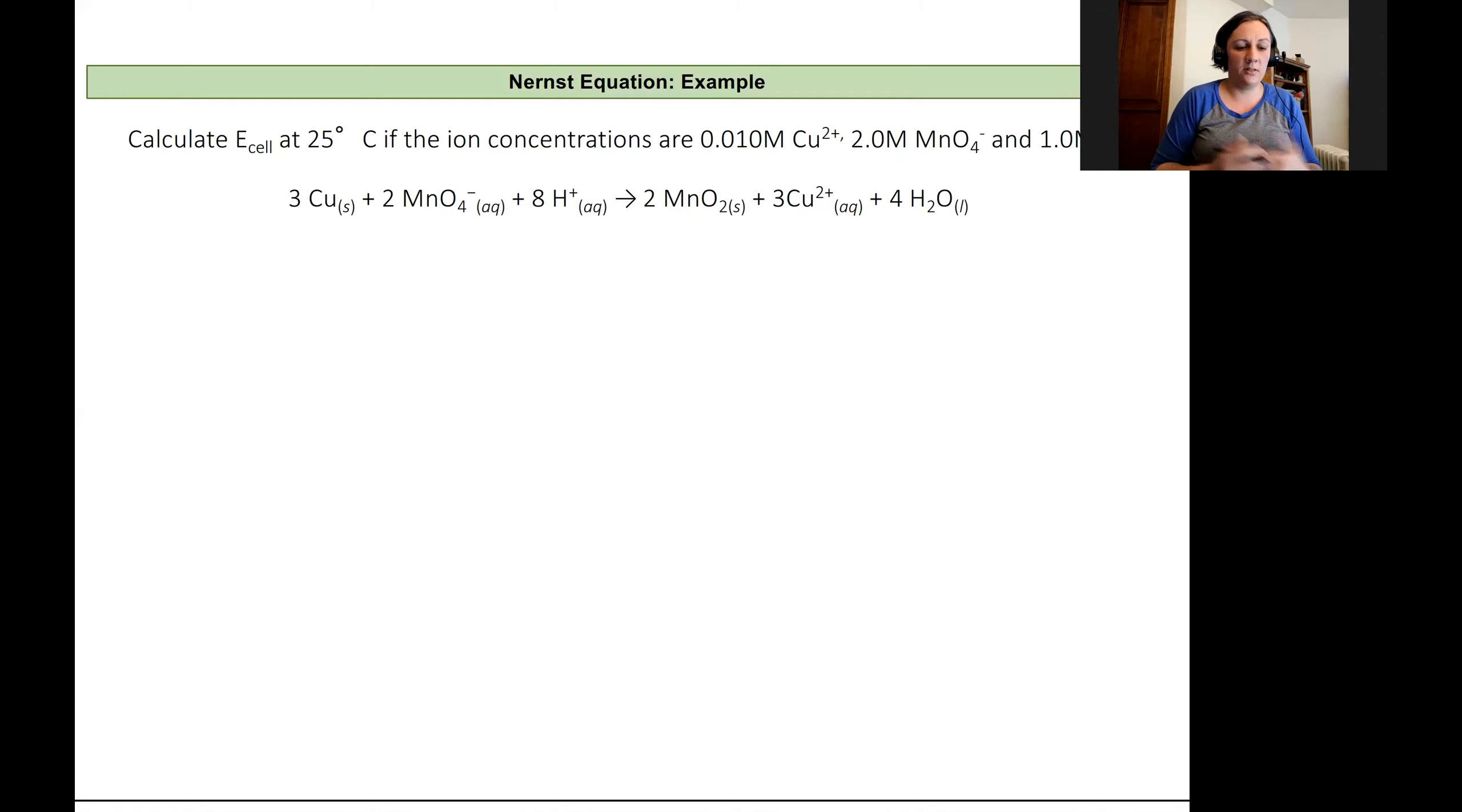So let's write out our Nernst equation. Our Nernst equation is the cell potential is going to be equal to our standard cell potential minus 0.0592 volts divided by N log of Q.